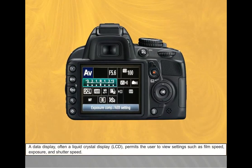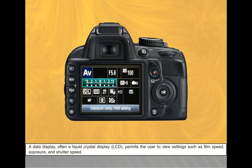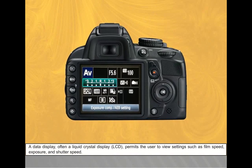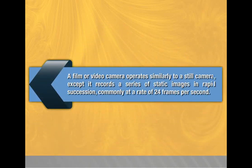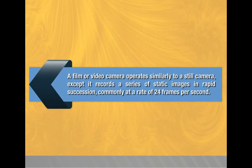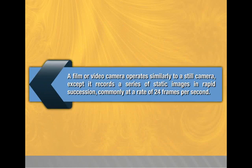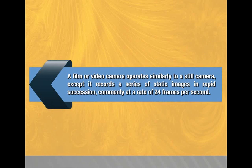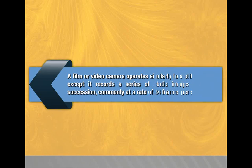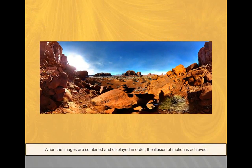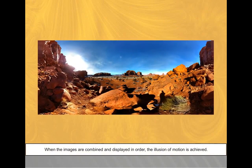A data display, often an LCD, permits a user to view settings such as film speed, exposure, and shutter speed. A film or video camera operates similarly to a still camera, except it records a series of static images in rapid succession — commonly at 24 frames per second. When the images are combined and displayed in order, the illusion of motion is achieved.